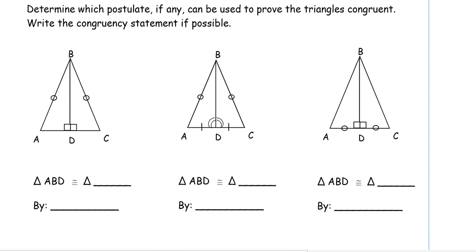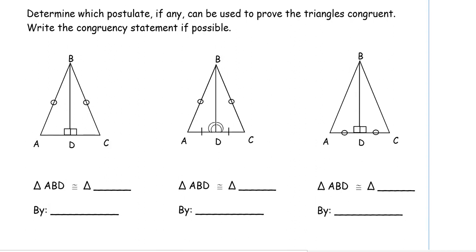So, we're going to determine which postulate, if any, can be used to prove the triangles congruent. Then, we are going to write that congruency statement. So, we look through our diagram. We need three pieces of information. I look at what I'm provided with. When I look here, I see this right angle. These two right angles match up awesome. I see these two circles marking AB and BC congruent. That's awesome. That's a side length.